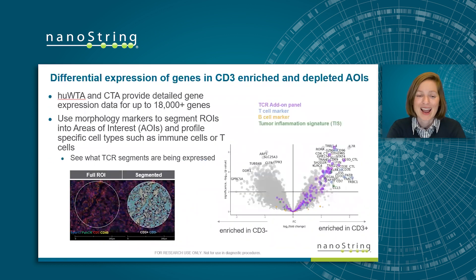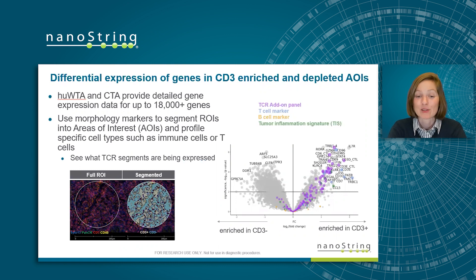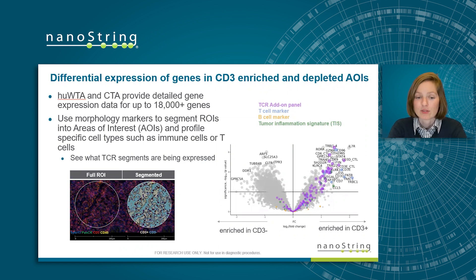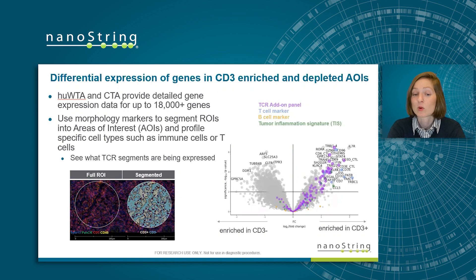The GeoMix TCR atom profiling panel provides rich data to complement the human WTA or CTA panel. You can use morphology markers such as CD3 to segment ROIs into areas of interest, or AOIs, and profile specific cell types such as immune cells or T-cells. You can then see what TCR segments are being expressed in each area of interest. Here, we profiled a colorectal cancer tissue sample with the TCR profiling atom panel and human WTA, using CD3 as a morphology marker to segment into separate AOIs. In CD3-rich regions, several TCR segments are enriched, as well as T-cell marker and tumor inflammation signature genes, which are found in the human WTA panel.